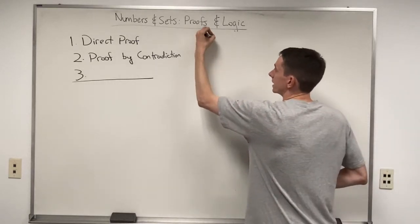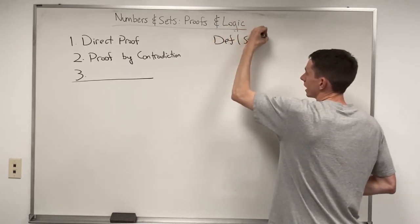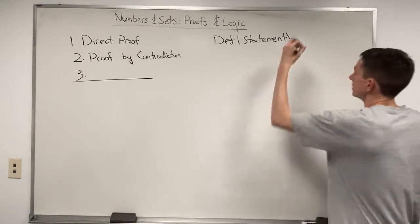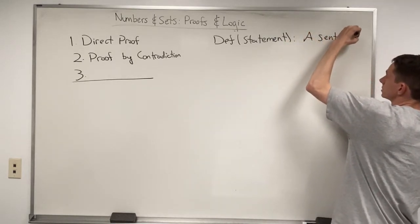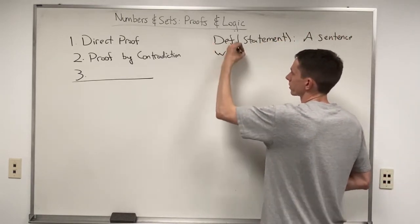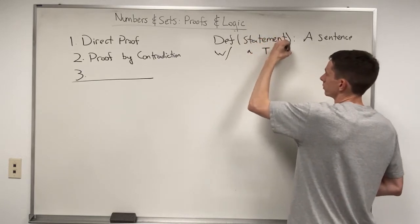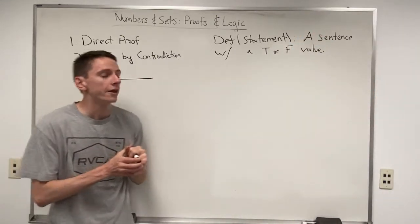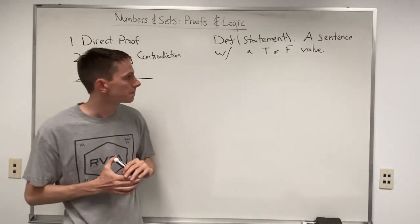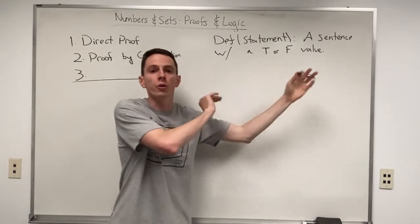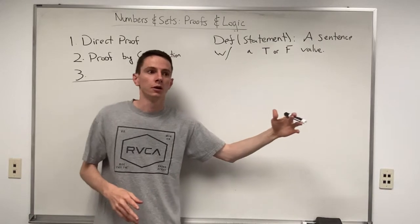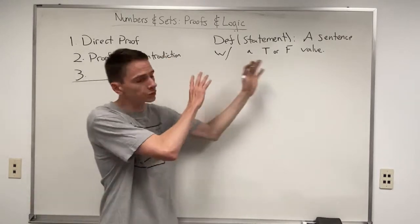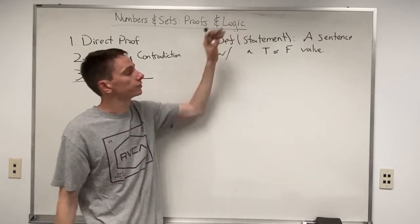That is the first goal with learning elementary logic: we want to learn the building blocks of what elementary logic is. The building blocks of elementary logic are just statements. The definition of a statement is a sentence with a true or false value. We don't necessarily need to know right away if a statement is true or false, but once we do find out, it has to be one or the other — there's no gray area in between.